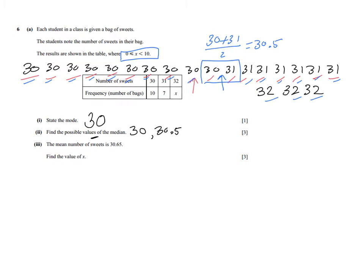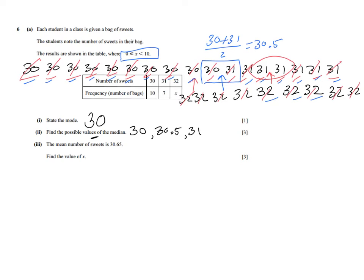I can continue experimenting with x, adding more values as long as x is less than 10. Let's try the highest possible value — 9 bags of 32 sweets. Eliminating from both ends, I end up with 2 pieces of information both showing 31. What is 31 plus 31 divided by 2? That is 31. So the third possible value for the median is 31. That's a very useful visual way of solving it.